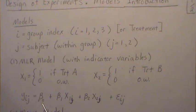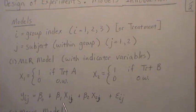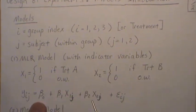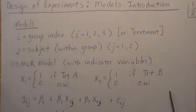So each observation, there's an intercept. If it's treatment A, this is a one, and that's a zero. If it's treatment B, this is a zero, and this is a one. And if it's treatment C, they're both zero, so the effect is just beta zero.